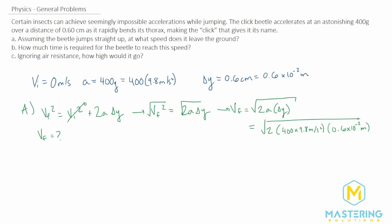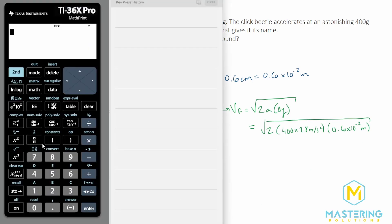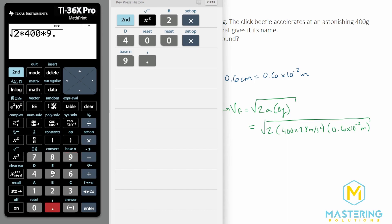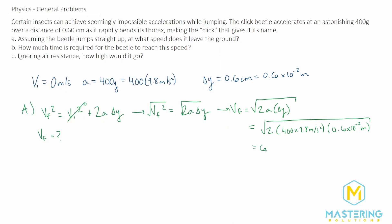So now when we take the square root of all of that, we have 2 times 400 times 9.8 times 0.6 times 10 to the negative 2, which gives us a final velocity as it jumps of 6.86 meters per second. So here's the answer for part A of how fast is it leaving the ground.